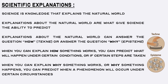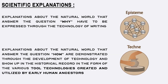Another aspect of science is that it requires a means to express the knowledge acquired. Explanations about the natural world that answer the question why have to be expressed through the technology of writing. Therefore, historical evidence of science which provides explanations answering why shows up in the historical record after the invention of writing. However, explanations that answer the question how are demonstrated through the development of technology, and evidence of this shows up in the form of tool technologies created and utilized by early human ancestors.